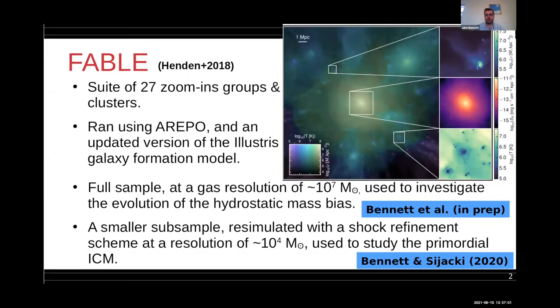We have 27 zoom-ins of groups and clusters from about large groups of 5 times 10^13 up to clusters of 2, 3, 4, 5 times 10^15 solar masses, and we've run that using AREPO and an updated version of the Illustris galaxy formation model with updated AGN feedback and stellar feedback models.